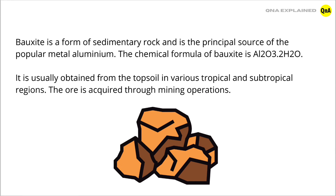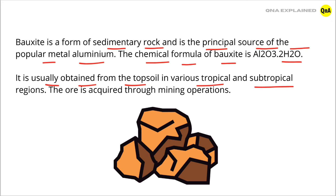Once again: bauxite is a form of sedimentary rock and is the principal source of the popular metal aluminium. The chemical formula of bauxite is Al2O3 2H2O. It is usually obtained from the topsoil in various tropical and subtropical regions. The ore is acquired through mining operations.